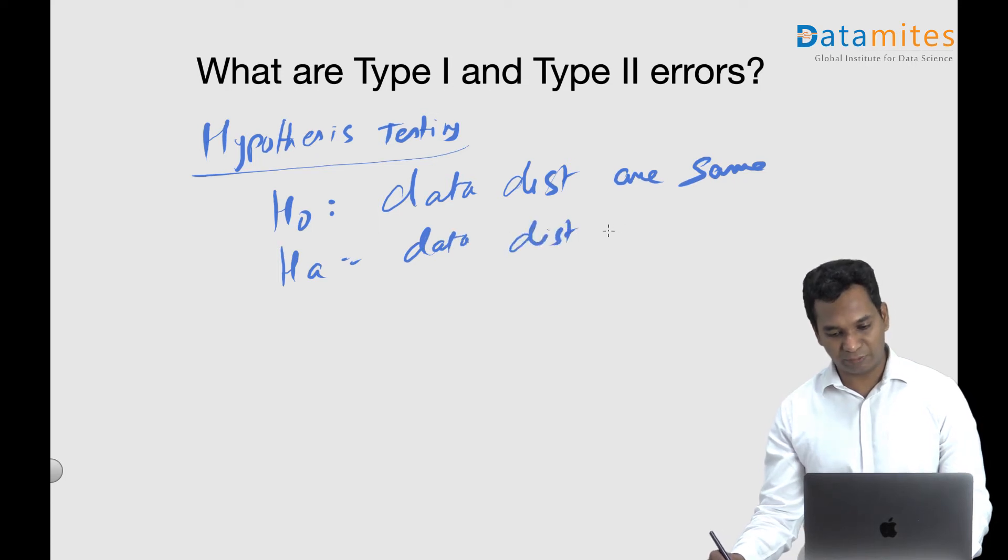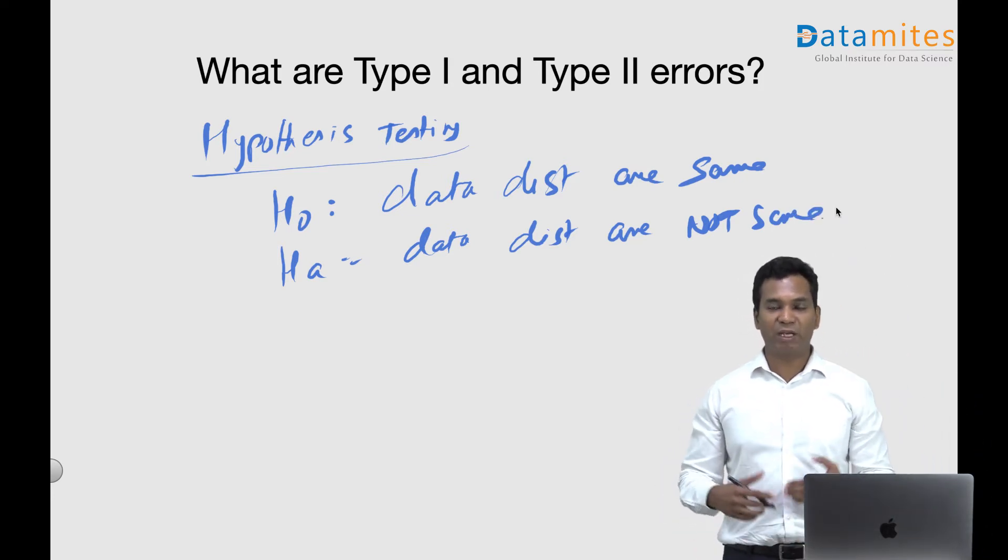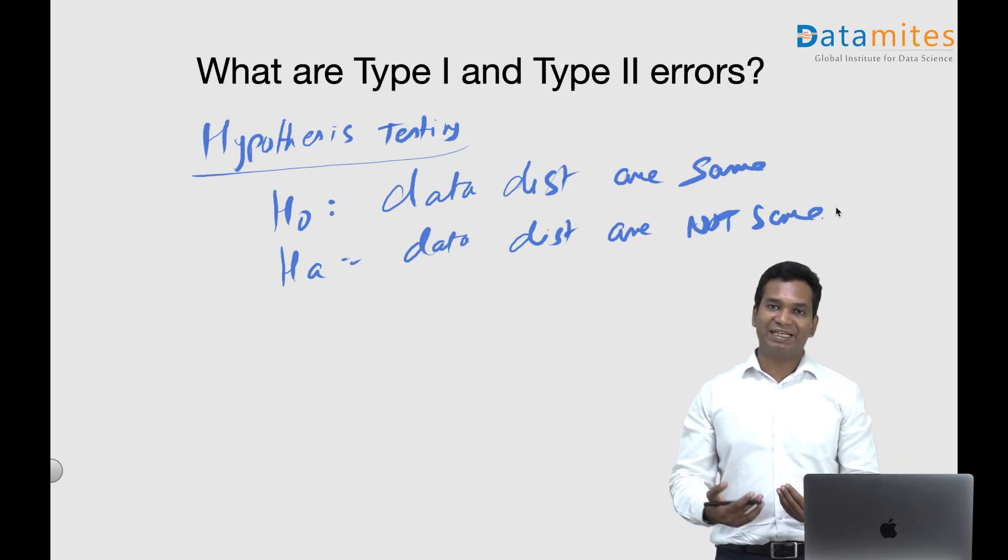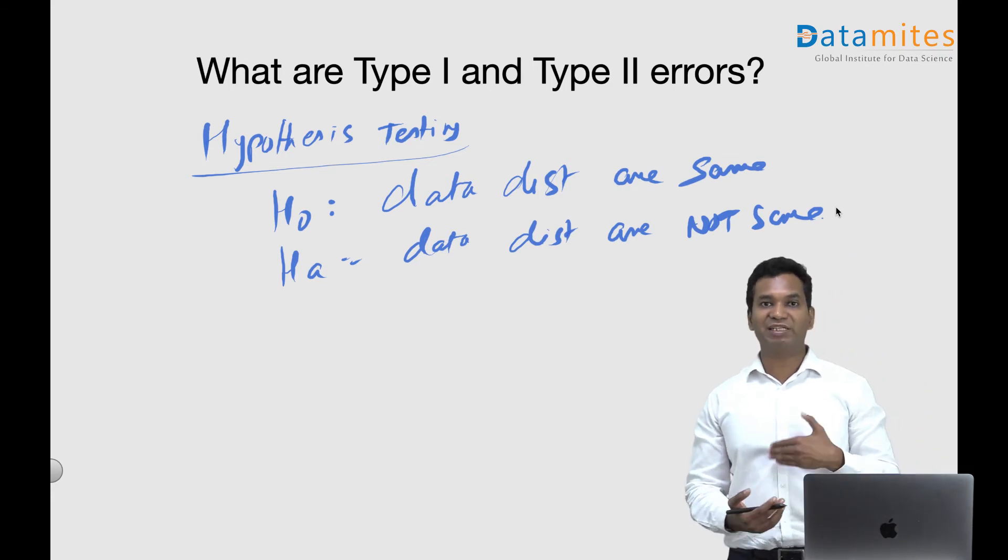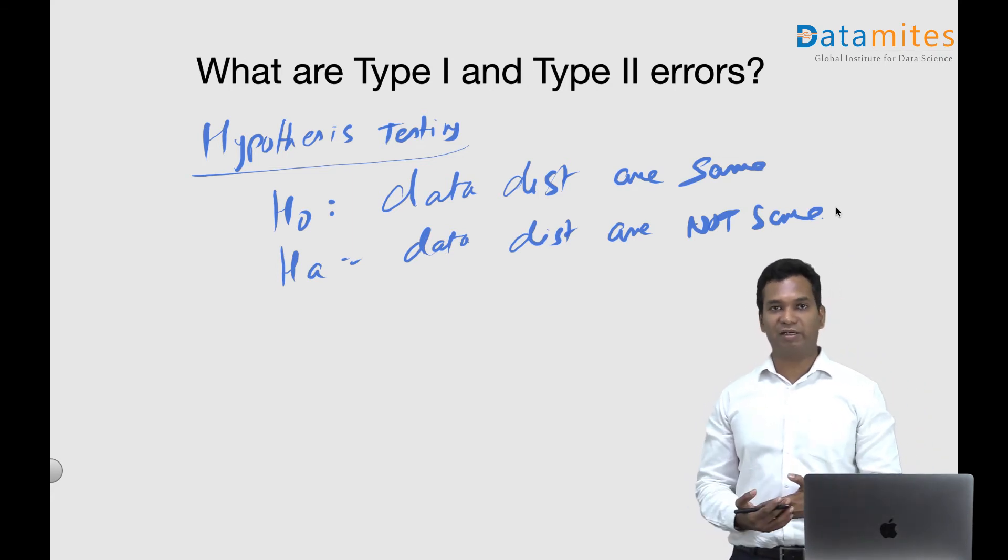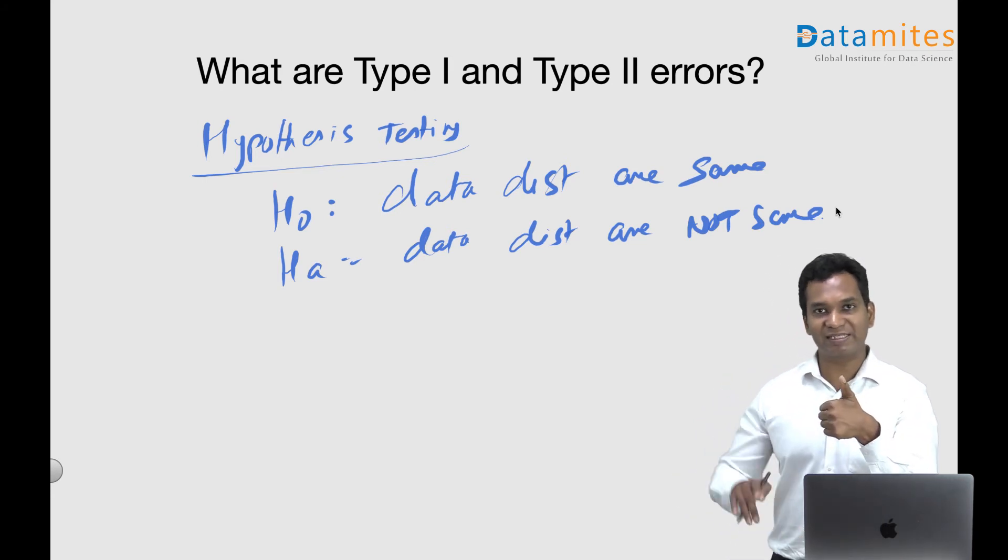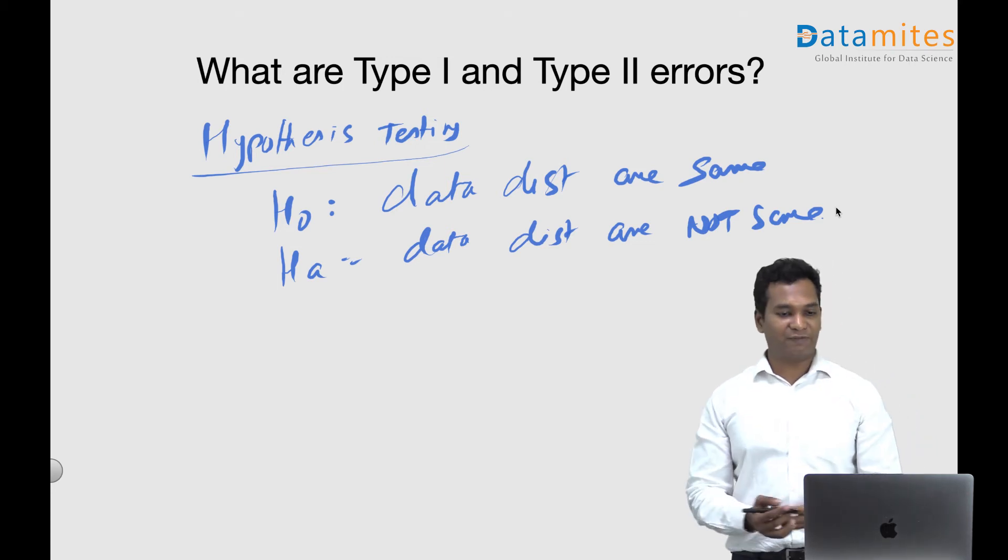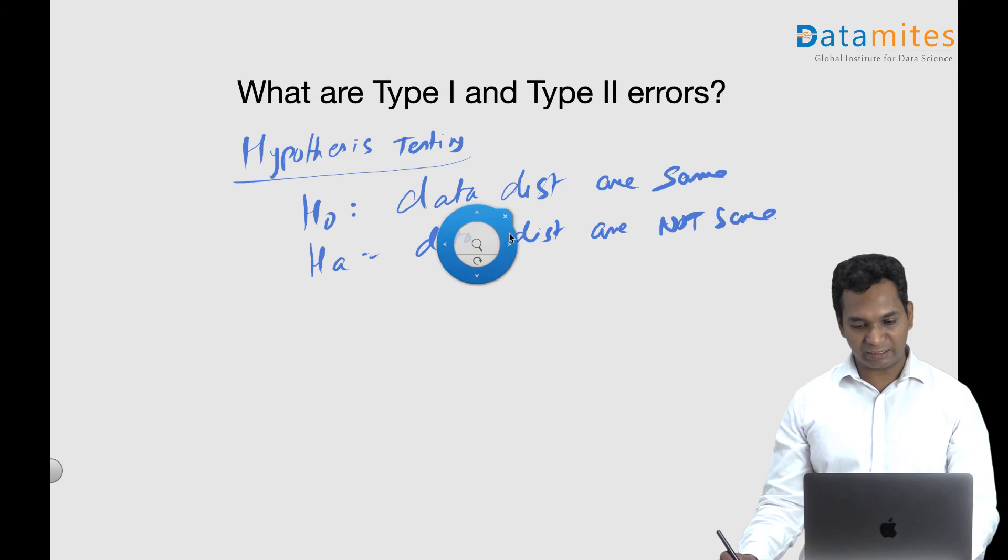When you do the testing and come up with the answer by the quantitative data, you can say maybe we can accept the null hypothesis or we can reject the null hypothesis. When you reject the null hypothesis, we accept alternate hypothesis. So we have two options: either we reject null hypothesis and accept alternate, or we accept null hypothesis itself. There can be four different situations which can arise from this outcome.